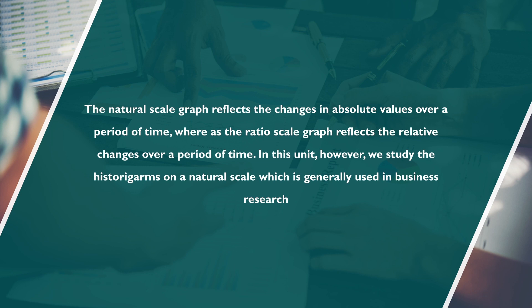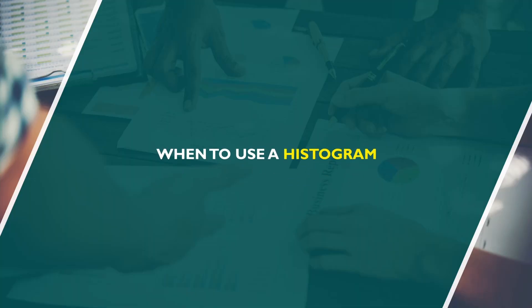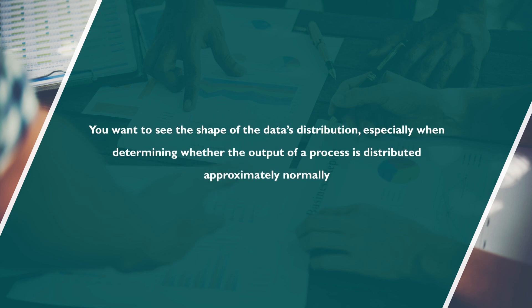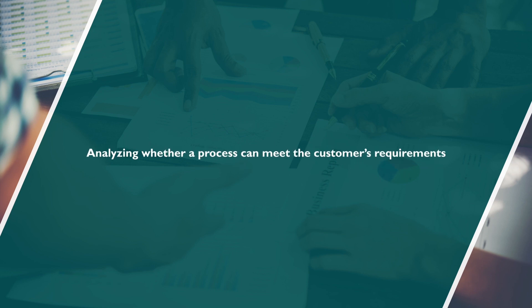On a natural scale, the graph reflects changes in absolute values over a period of time, whereas a ratio scale graph reflects relative changes. In this presentation, we study histograms on the natural scale, which is generally used in business research. When to use a histogram: when the data are numerical and you want to see the shape of the data's distribution, especially when determining whether the output of a process is distributed approximately normally, or analyzing whether a process can meet customer requirements.